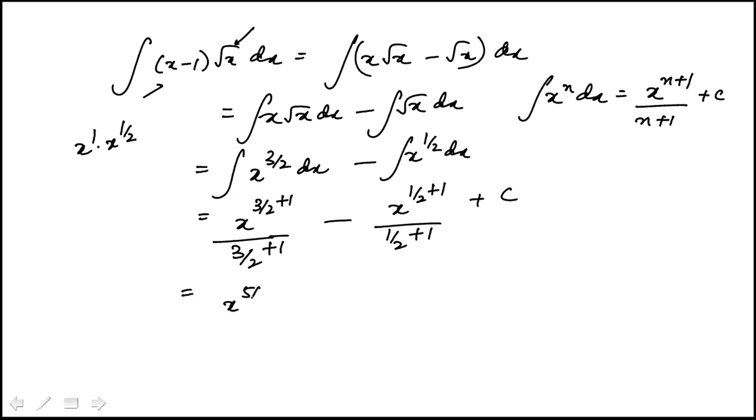Numerator becomes 5 over 2. Now this is also 5 over 2, but flips. And same thing here. This is 3 over 2. That's going to become 2 thirds. And the exponents add up to 3 over 2.